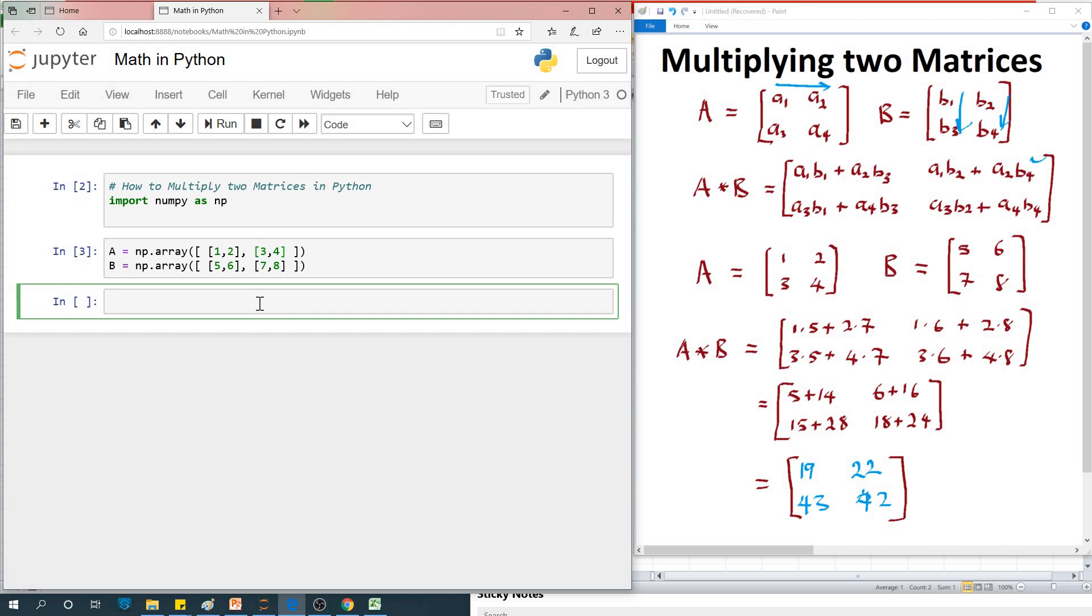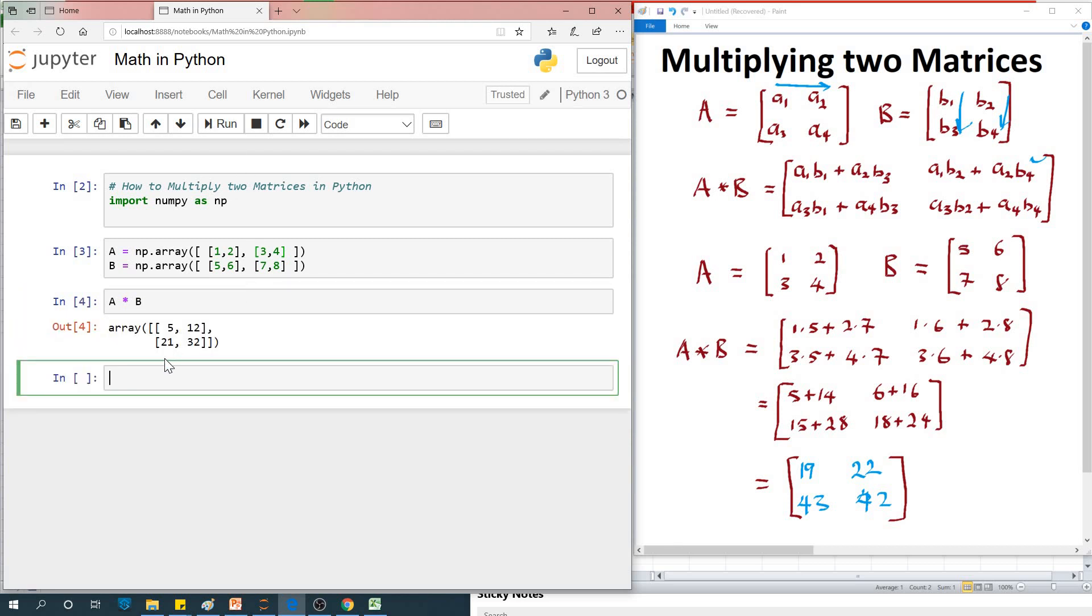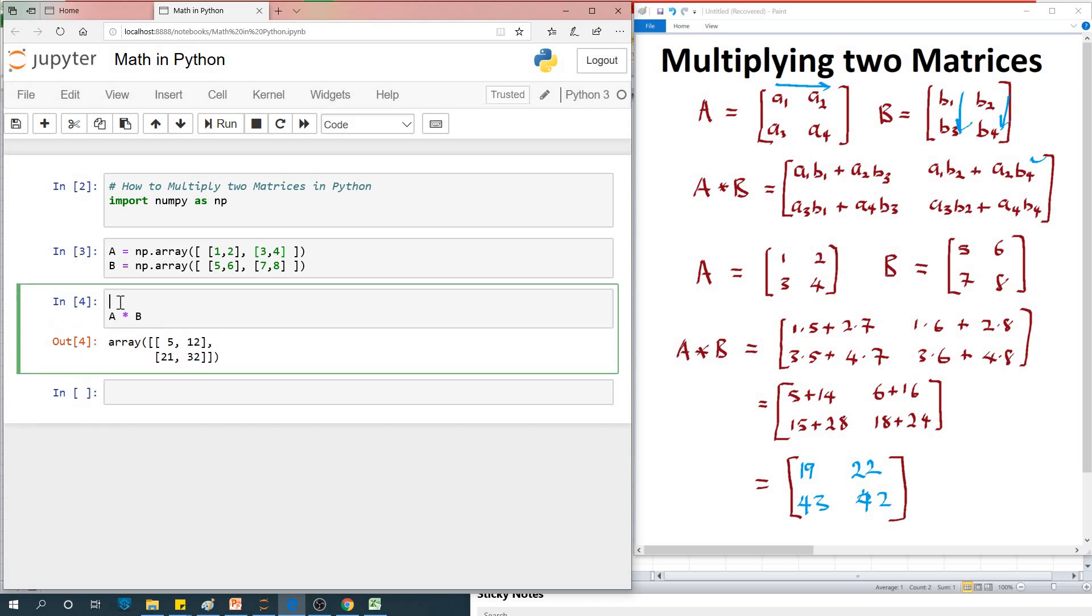Now I'm going to say A times B. Let's see what we have. So we have this array. You can see that this is not correct, and that is the problem I want to clarify in this video.